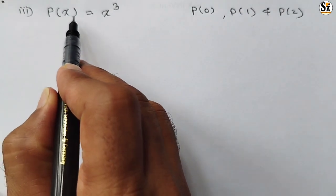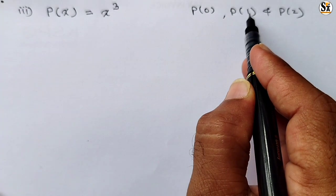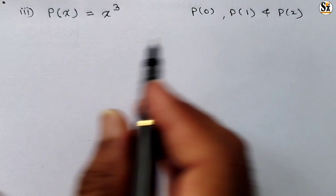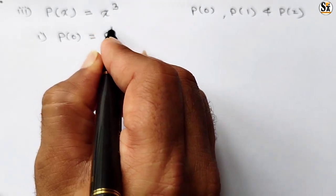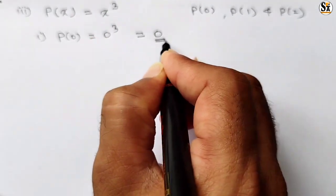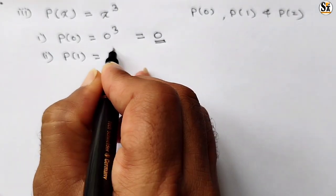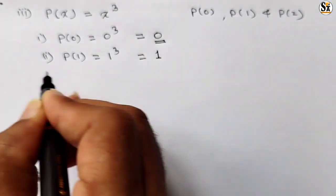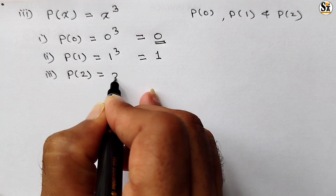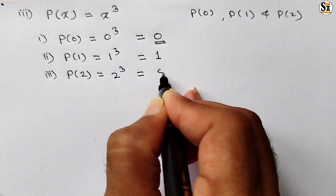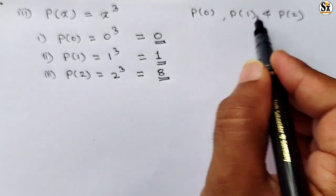Now see the third polynomial: p(x) = x³. We find its value when x equals 0, 1, and 2. For p(0): 0³ equals 0. For p(1): 1³ equals 1. For p(2): 2³ equals 8. So these are the three answers of this polynomial when putting variable values 0, 1, and 2.